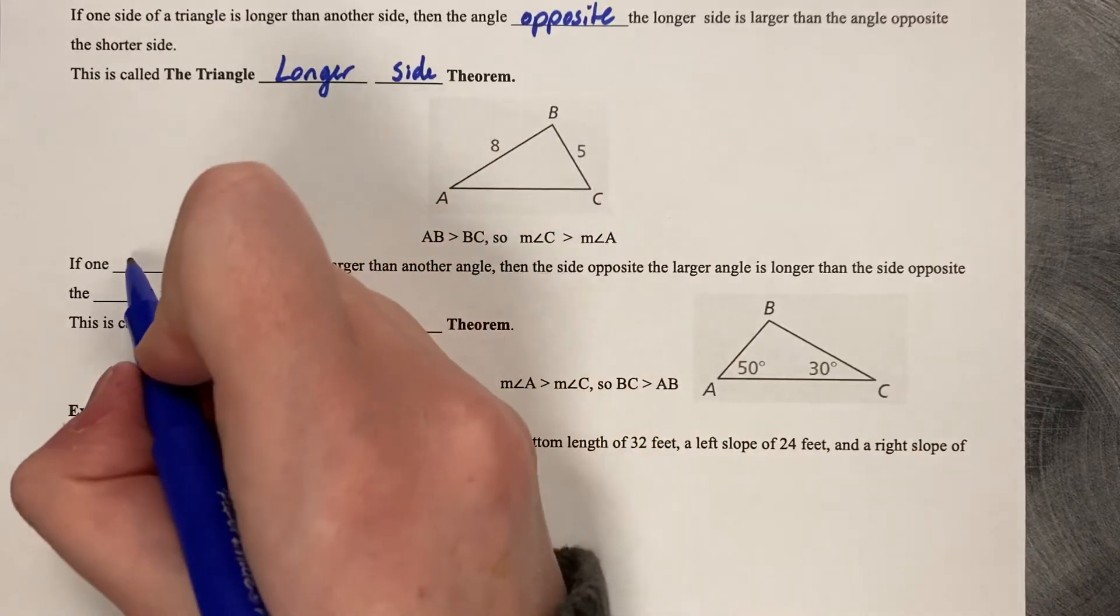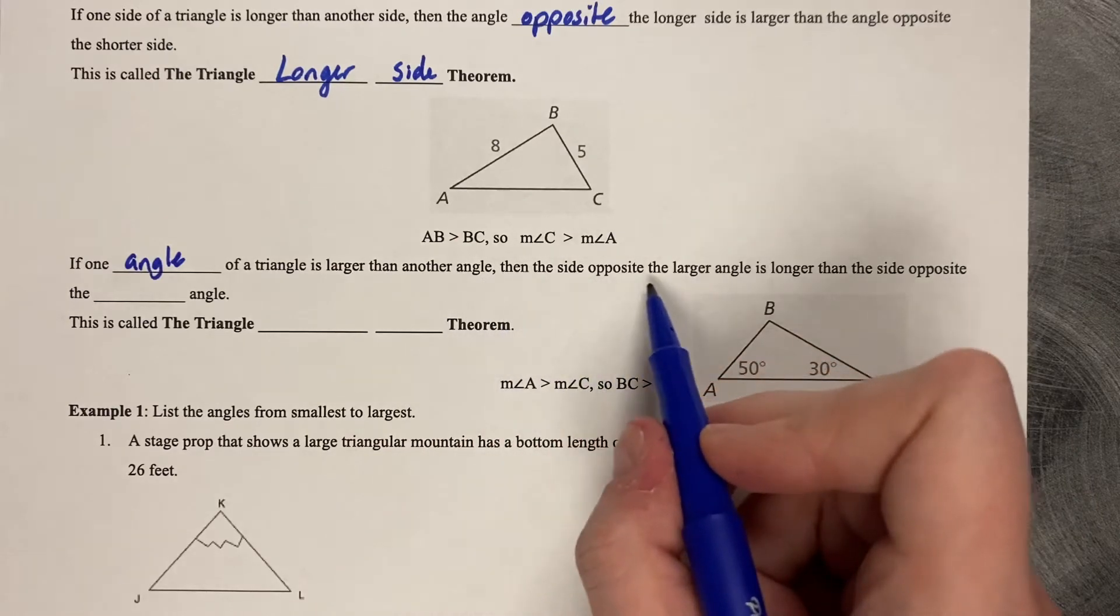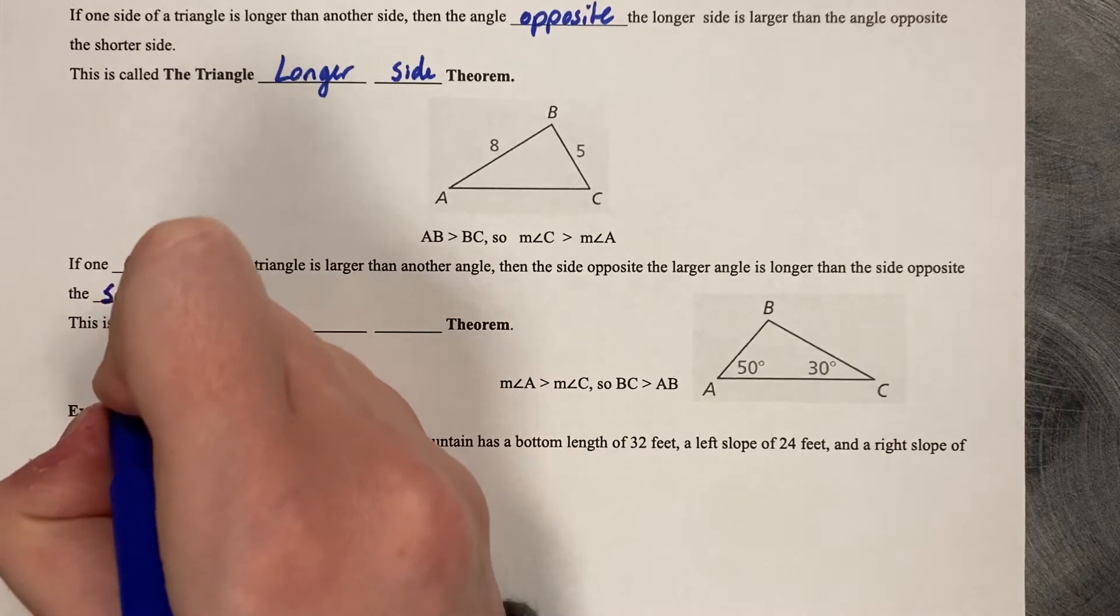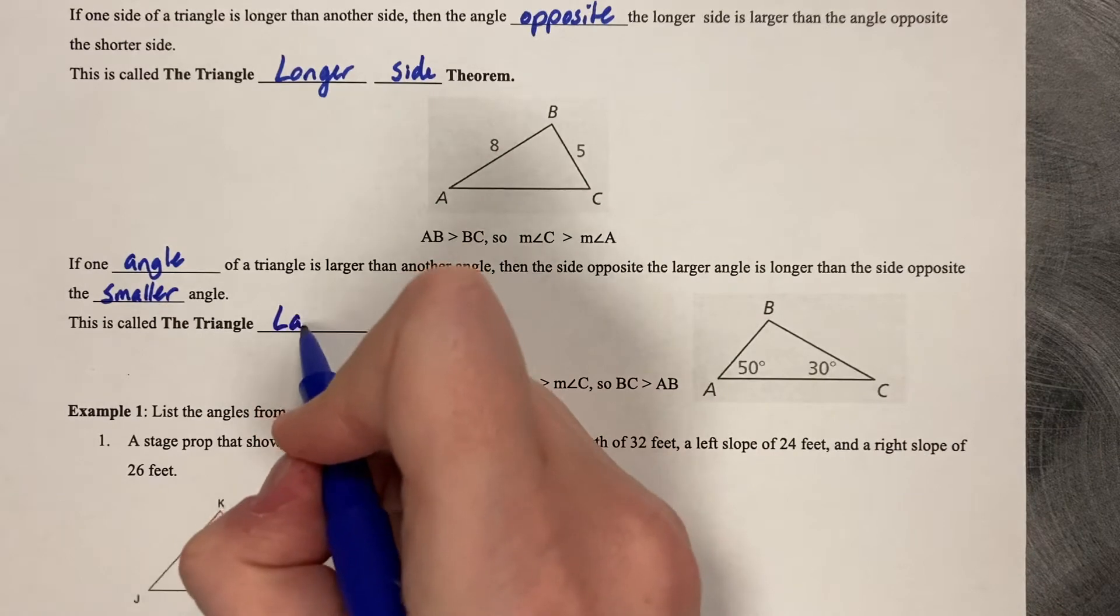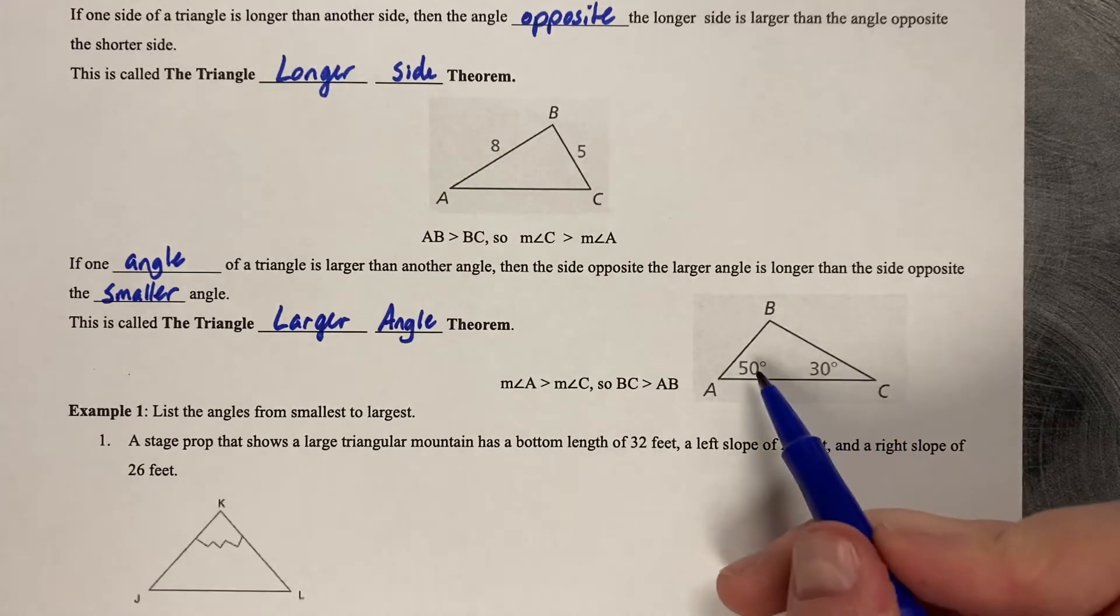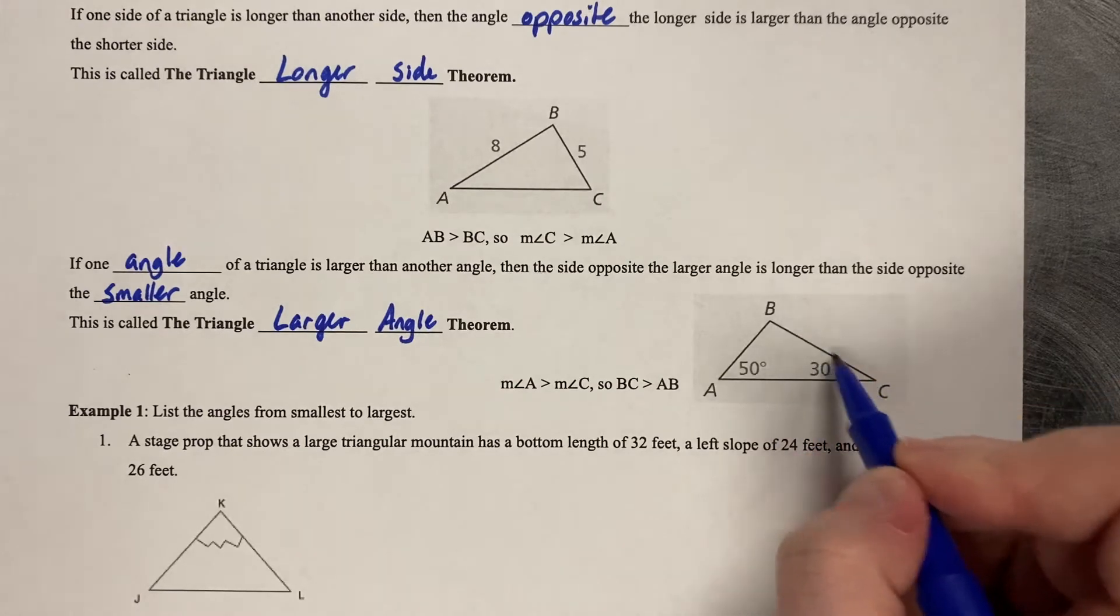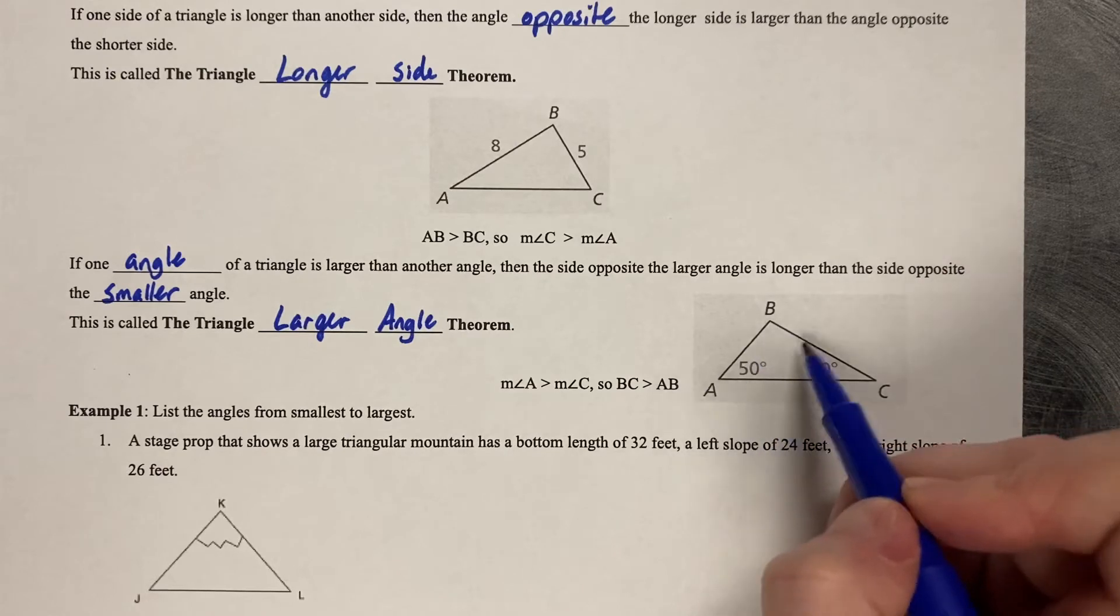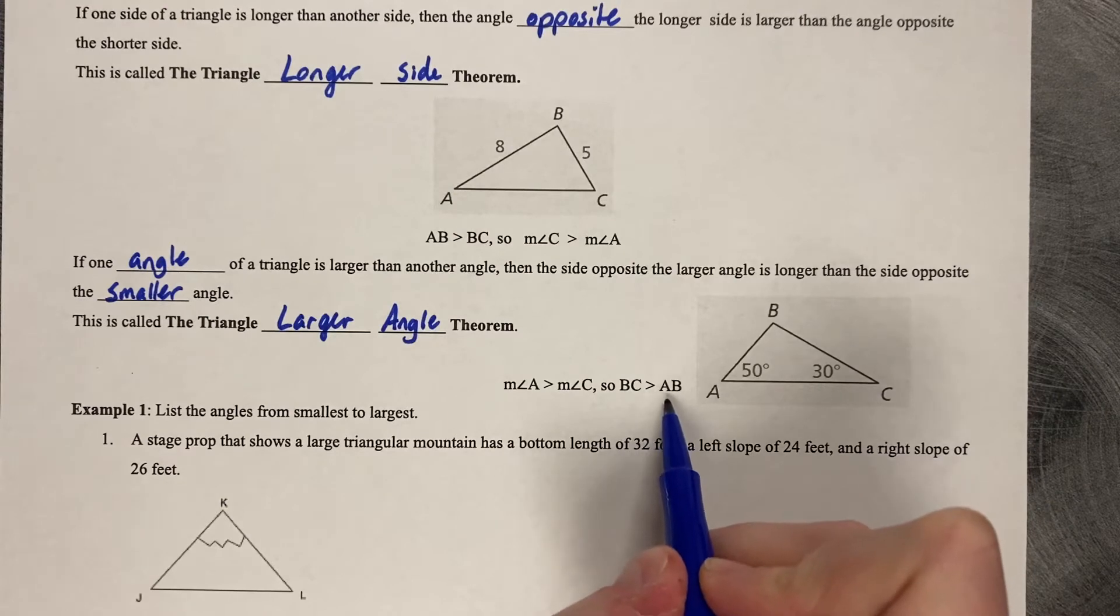If one angle of a triangle is larger than another angle, then the side opposite the larger angle is longer than the side opposite the smaller angle. This is called the triangle larger angle theorem. So let's take a look at this example. If this angle is 50 degrees and this angle is 30 degrees, that means that BC is longer than AB because 50 is bigger than 30. So BC is greater than AB.